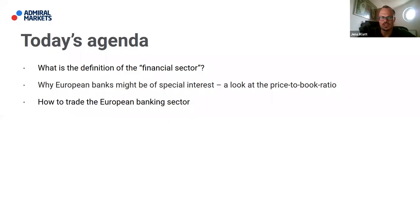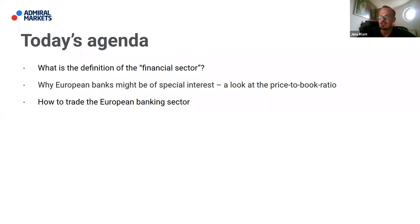Let's first look at today's agenda. First, we want to define the financial sector — it might seem self-explaining but it makes for a good starting point. Then we want to look especially at European banks, the so-called price-to-book ratio in the European banking sector, and then answer the question of how to trade the European banking sector.